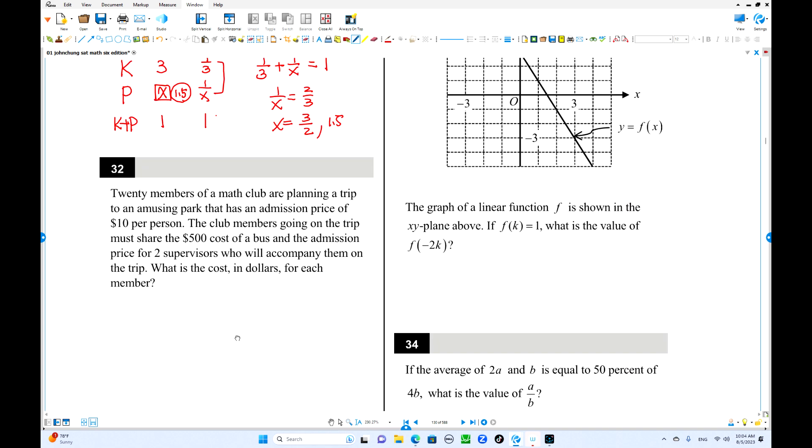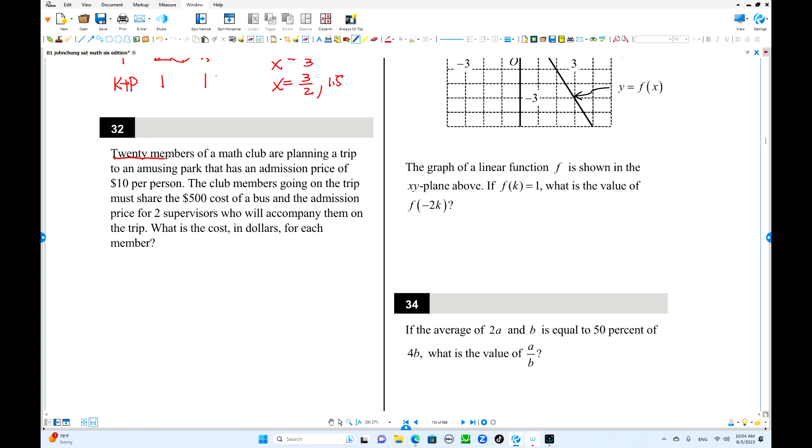Number two, we have 20 members. They're planning a trip. There are admissions, $10 per person. But they need to share $500. This is for the cost of borrowing a bus and the admission price for two supervisors. They're going to pay for this one too. What is the cost in dollars for each admission? So total amount we have to find out. They're going to share, 20 members.